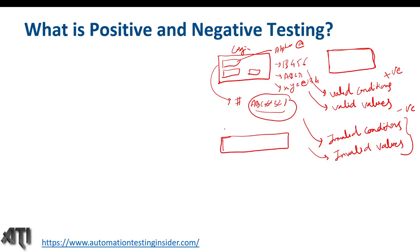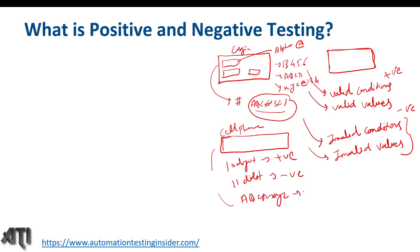Another example: a cell phone number field that should take exactly 10 digits. Providing 10 digits is a positive test case. Providing 11 digits is a negative test case — ideally it should not accept 11 digits. Providing alphabetic characters like 'abcdxyz' is also a negative test case, because the field should accept only numerical values of exactly 10 digits.